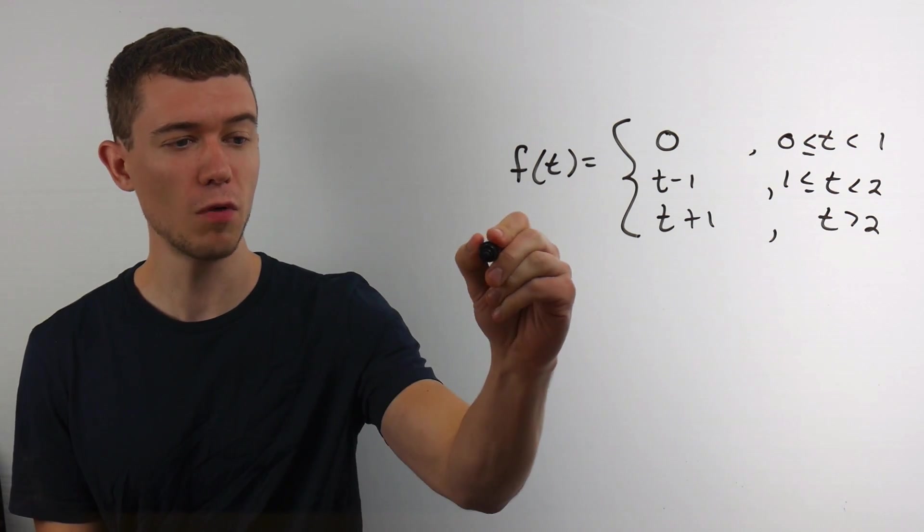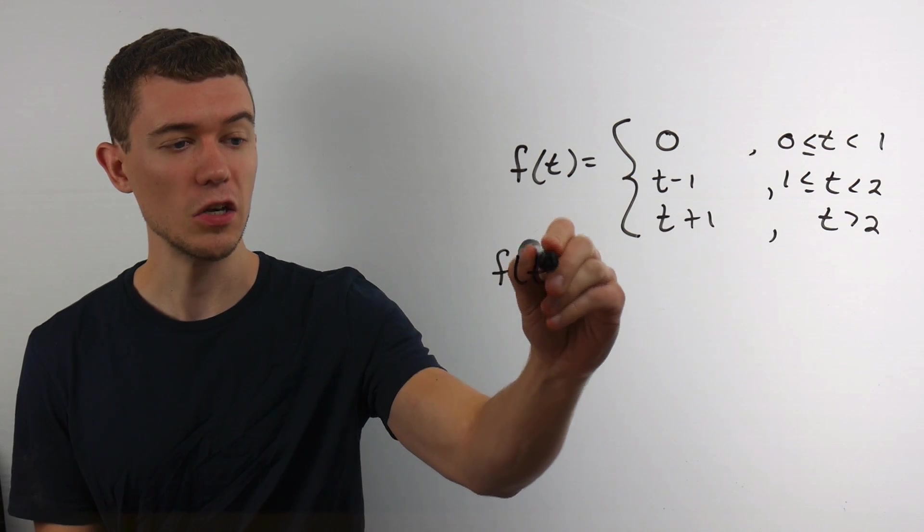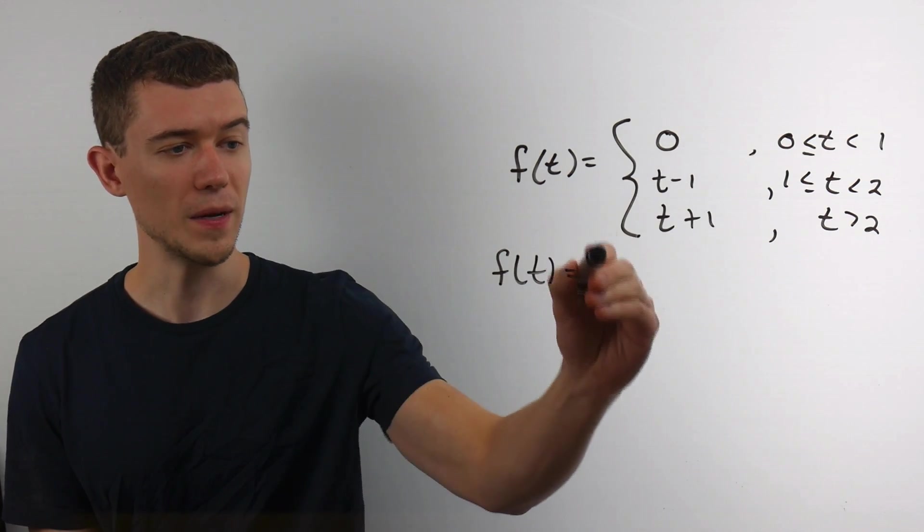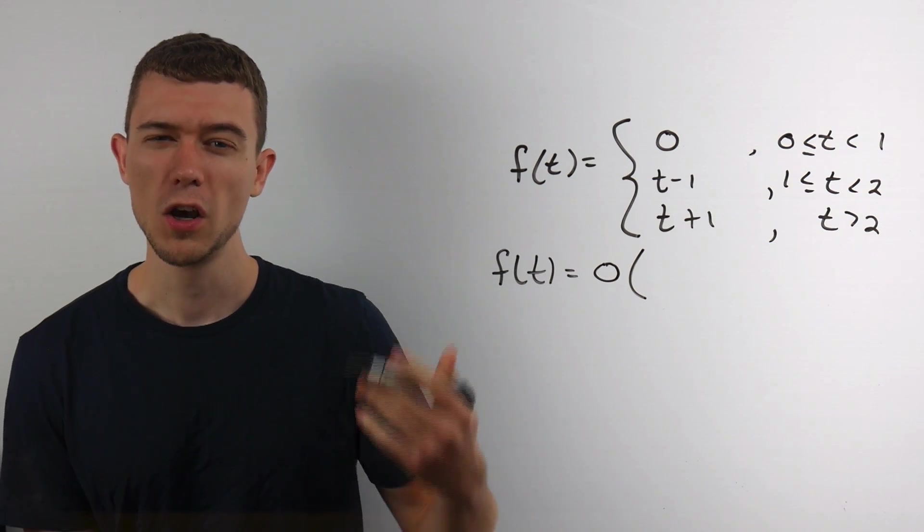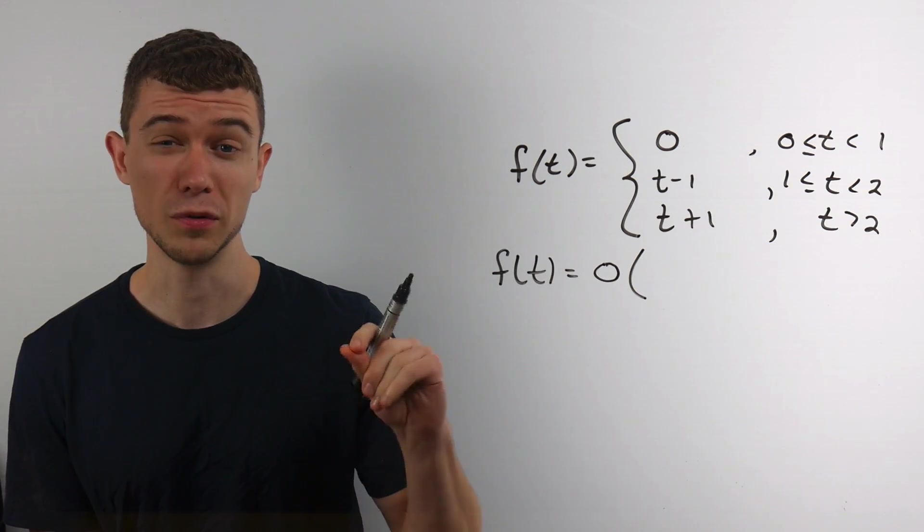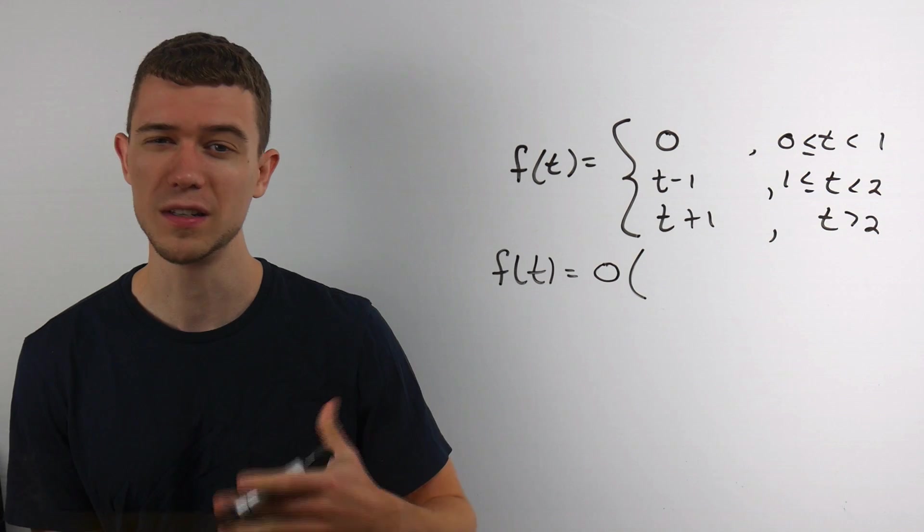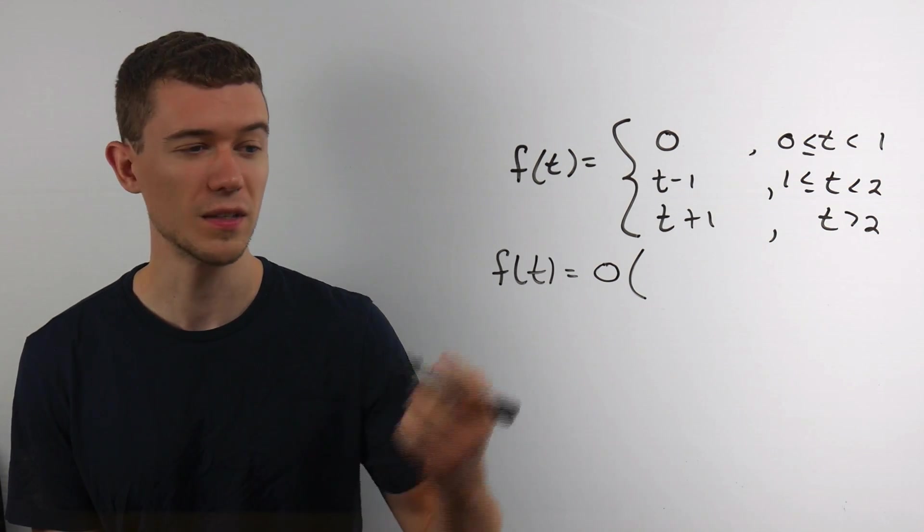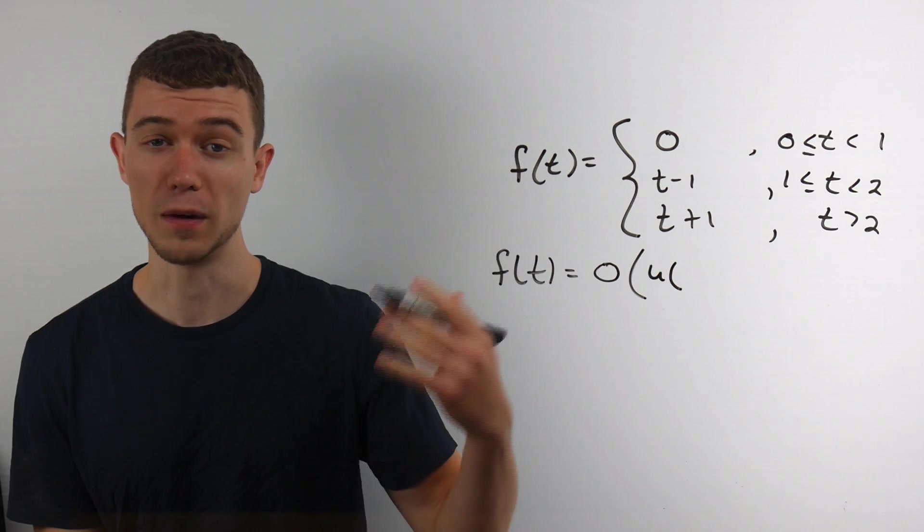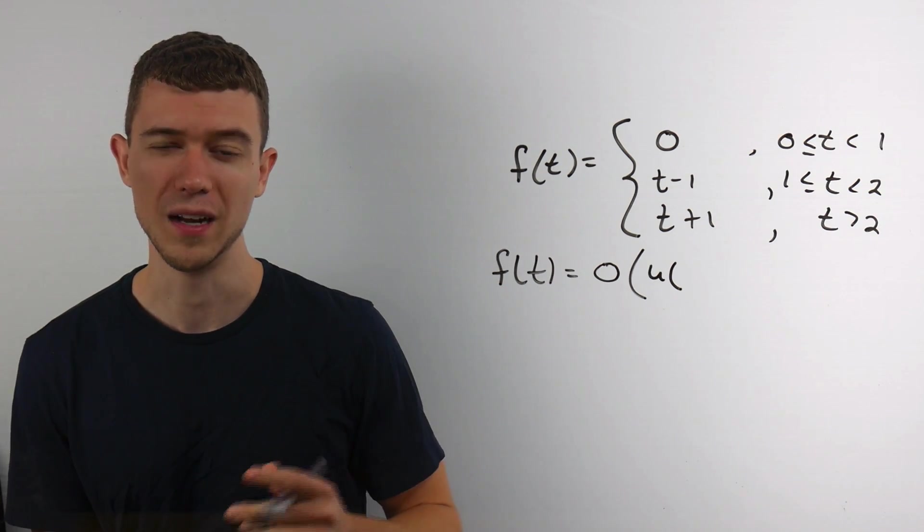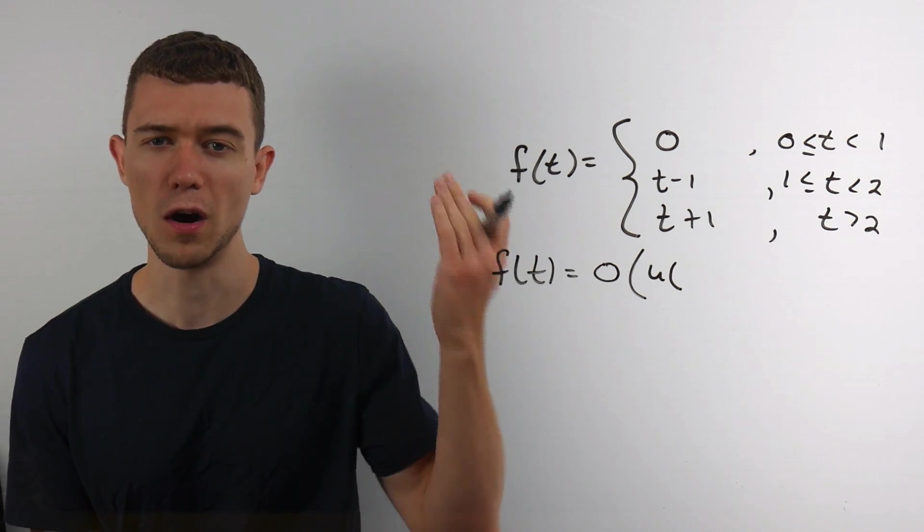So let's rewrite f of t using those. So the first one would be 0, and I'll show you the way that I do it. Your teacher might use a different notation for the step function. This is just the notation that I'm going to use. So the way that I think about this, this u signifying my unit step function, I think of it like a light switch, flipping on and flipping off.